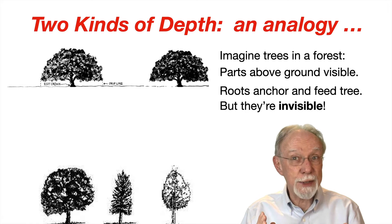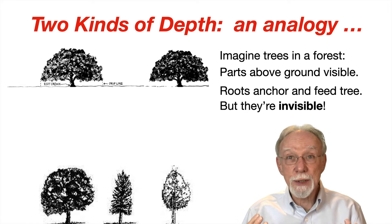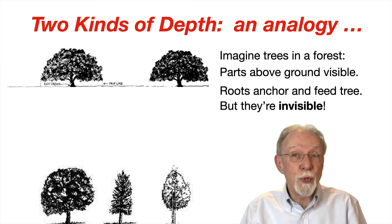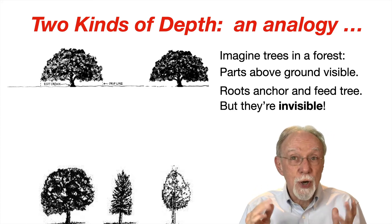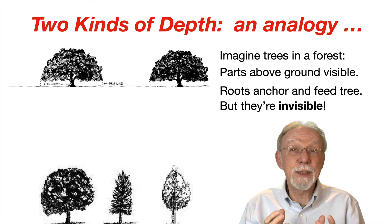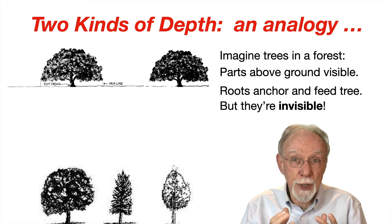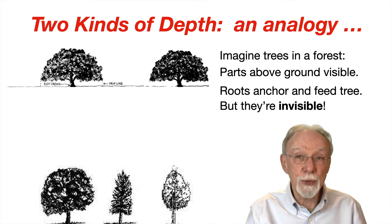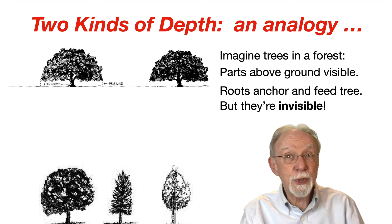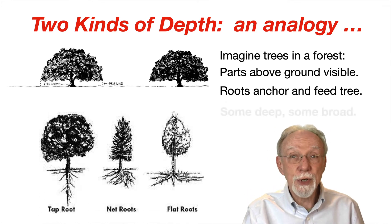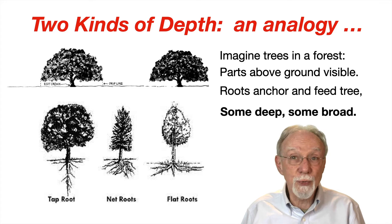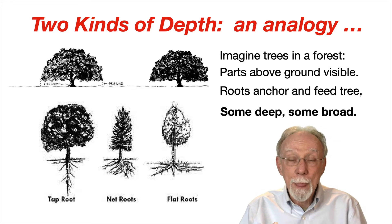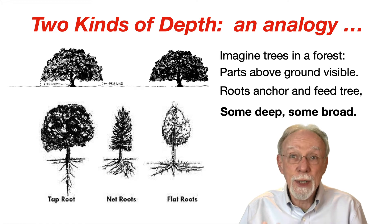There are actually two kinds of depth, and let's use an analogy of trees in a forest. The trunk and the branches are the core ideas of your topic, and the leaves are the facts and concepts that you need. Those are all in the curriculum, but there are parts underneath that you can't see — the roots — and that's what anchors and feeds the tree. That's your prior knowledge.